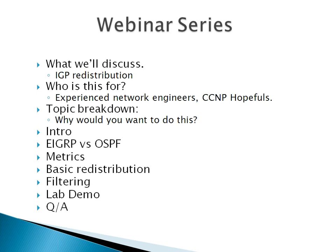We're going to cover why you would want to use redistribution, why you'd use more than one IGP, EIGRP versus OSPF, metrics and how they work when you redistribute, basic redistribution, and route filtering so you don't just redistribute everything. After each discussion about each topic, I'm going to lab up a simple example. That'll keep things broken up. At the end, we'll have a Q&A session and a little bit of information about our classes.